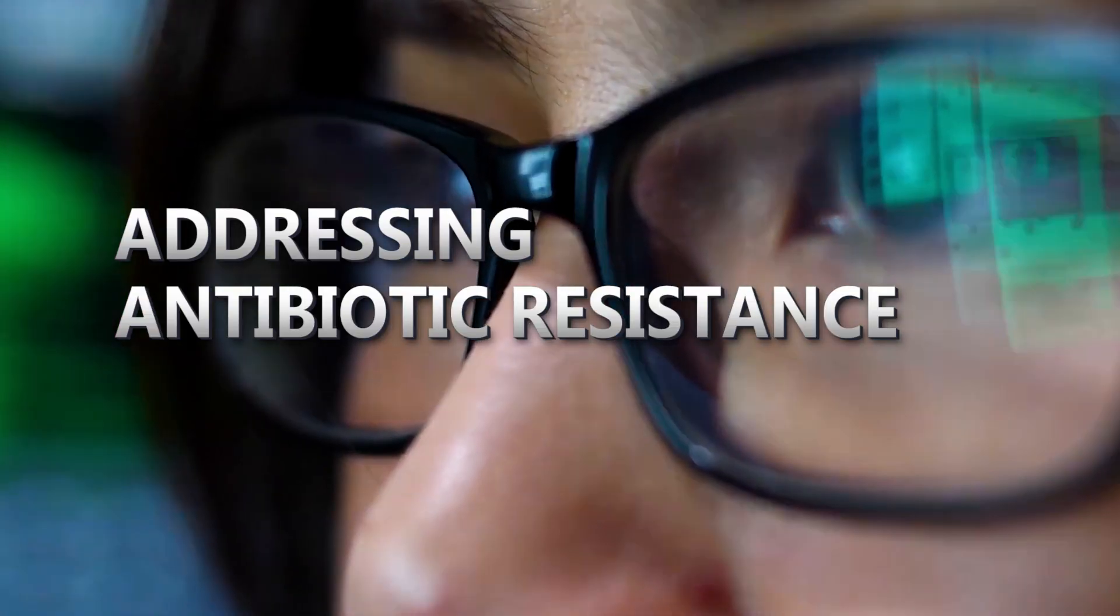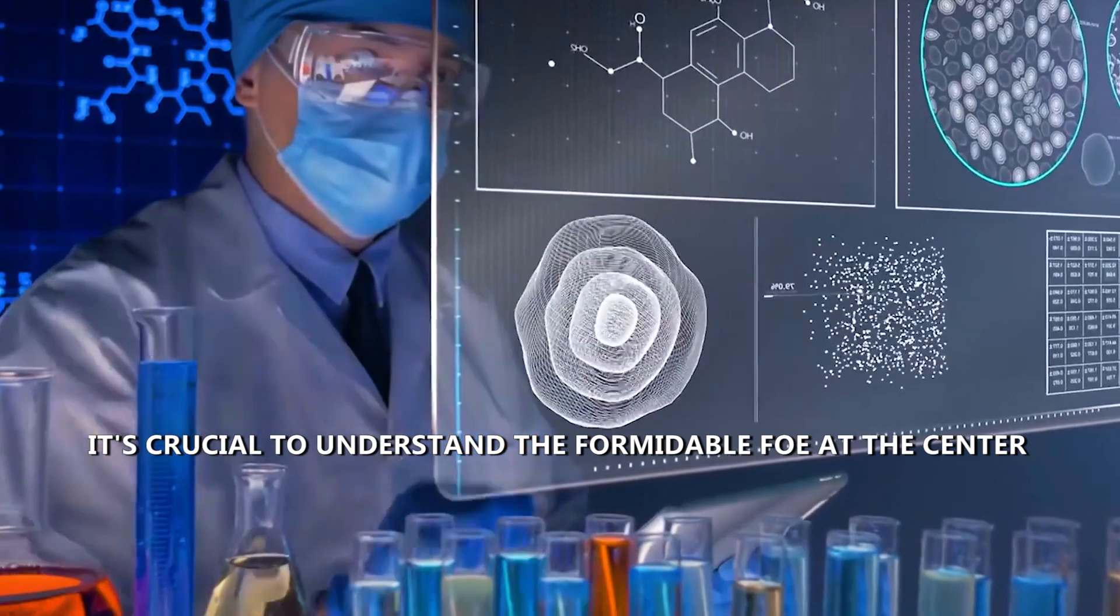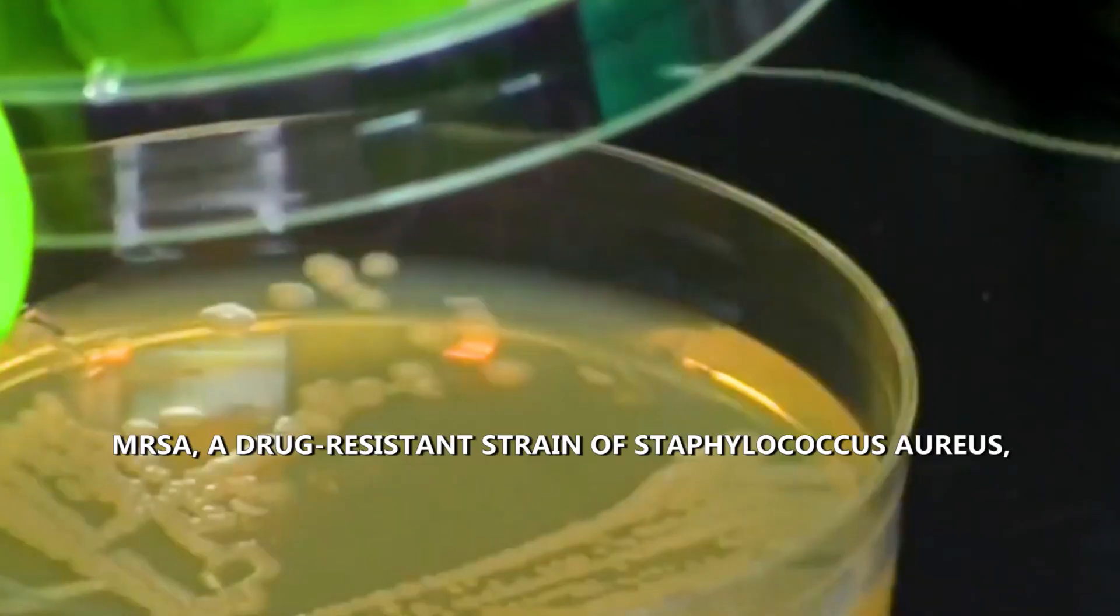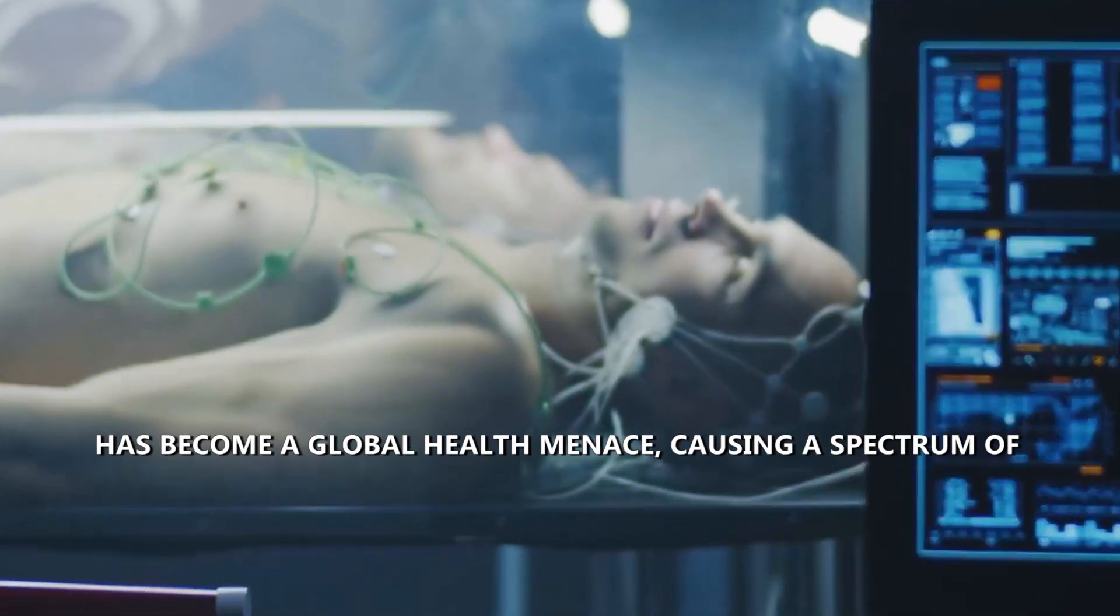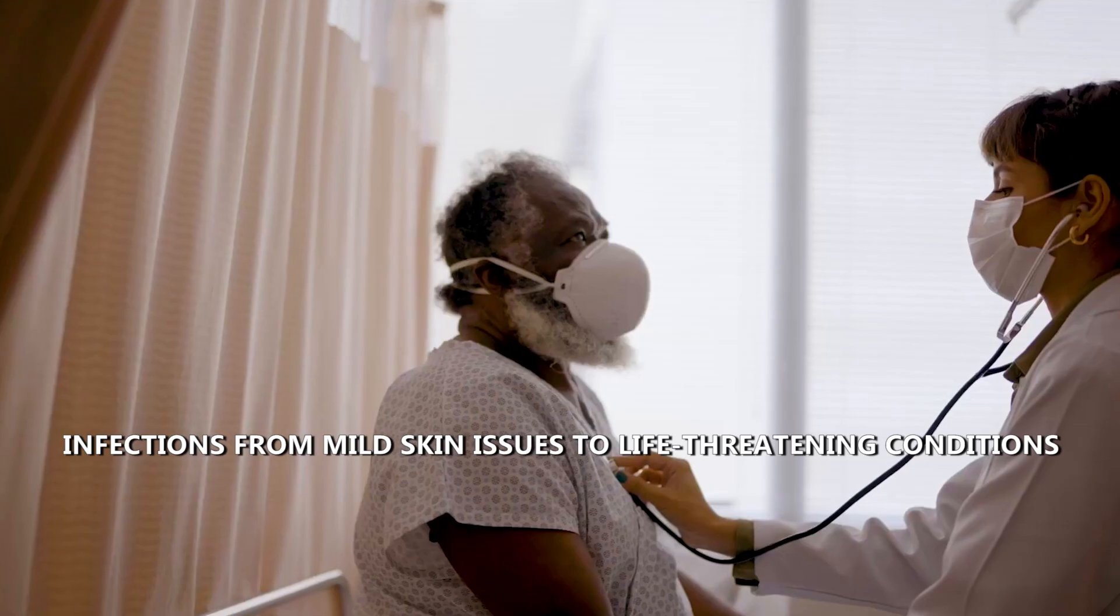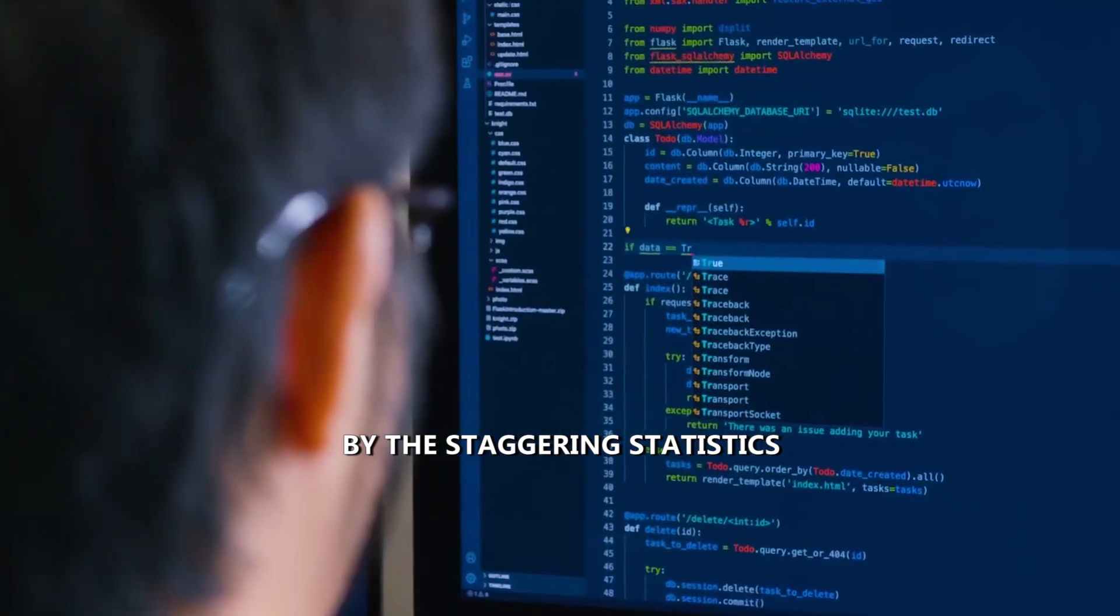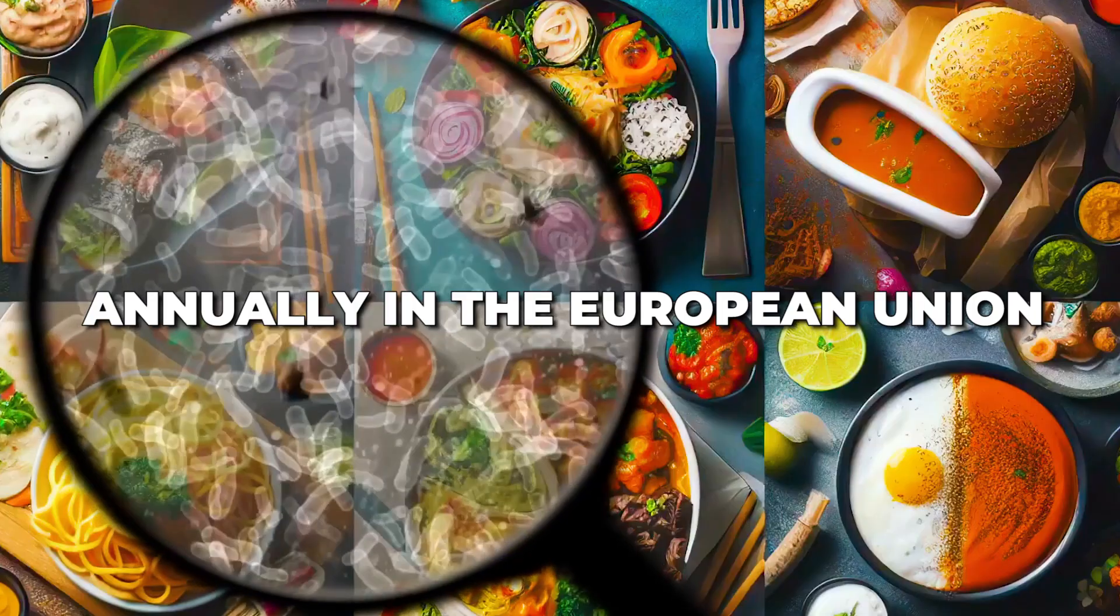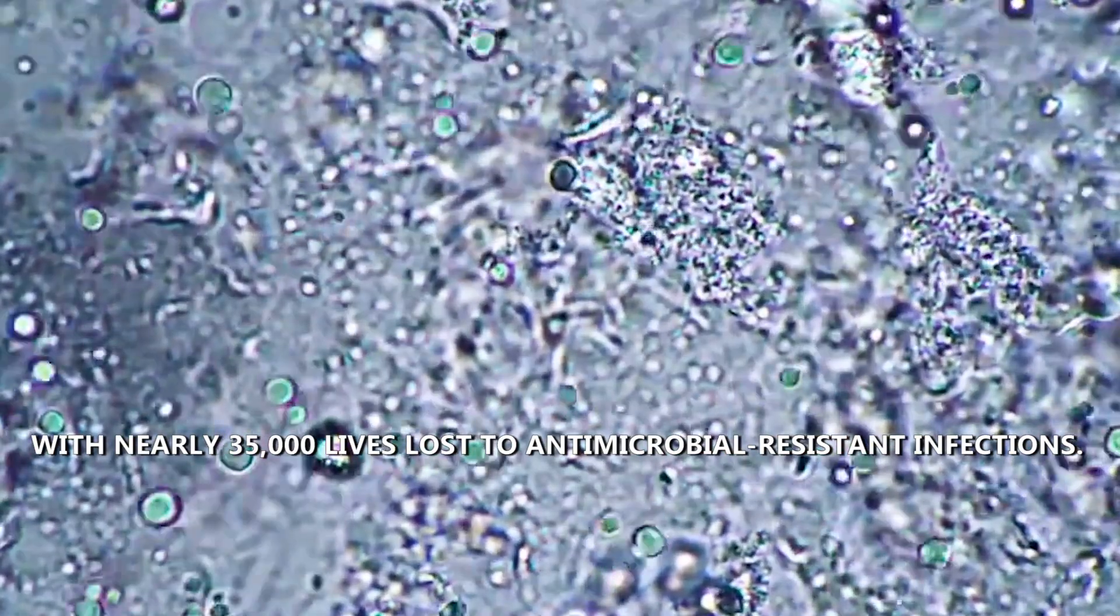Addressing antibiotic resistance. As we navigate the intricate world of antibiotic discovery, it's crucial to understand the formidable foe at the center of this scientific quest: antibiotic resistance. MRSA, a drug-resistant strain of Staphylococcus aureus, has become a global health menace, causing a spectrum of infections from mild skin issues to life-threatening conditions. The urgency to address antibiotic resistance is underscored by the staggering statistics: almost 150,000 MRSA infections annually in the European Union, with nearly 35,000 lives lost to antimicrobial-resistant infections.